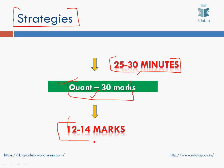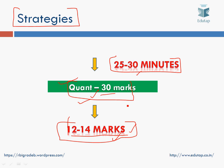Aim for a score of 12 to 14 marks out of 30. The sectional cutoff for quant is relatively low compared to other sections, so focus on getting around 12 to 14 marks. Pick and choose — you don't have to solve all the questions. Identify your strengths and pick questions accordingly.